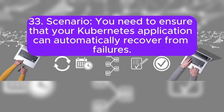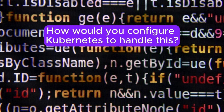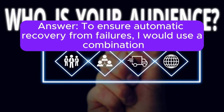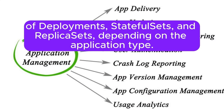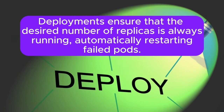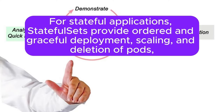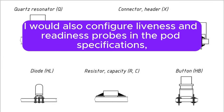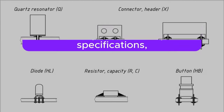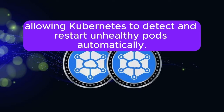Scenario 33: You need to ensure that your Kubernetes application can automatically recover from failures. How would you configure Kubernetes to handle this? Answer: To ensure automatic recovery from failures, I would use a combination of deployments, stateful sets, and replica sets depending on the application type. Deployments ensure that the desired number of replicas is always running, automatically restarting failed pods. For stateful applications, StatefulSets provide ordered and graceful deployment, scaling, and deletion of pods, ensuring each pod gets a stable network identity and persistent storage. I would also configure liveness and readiness probes in the pod specifications, allowing Kubernetes to detect and restart unhealthy pods automatically.